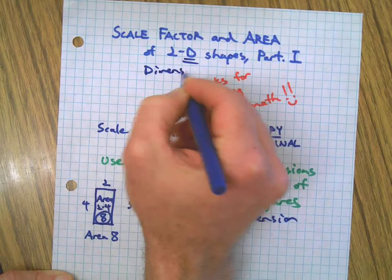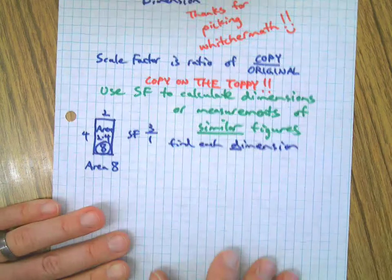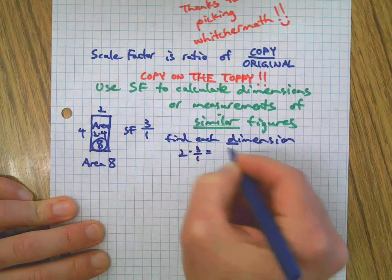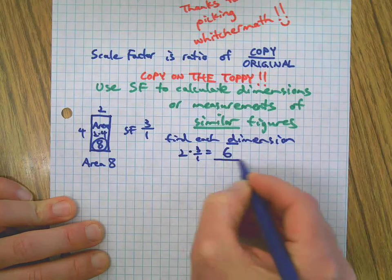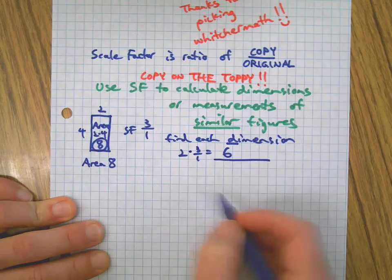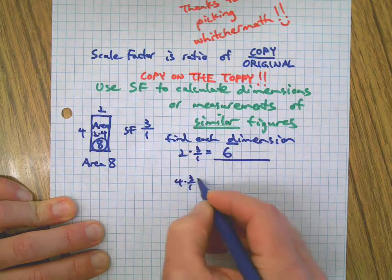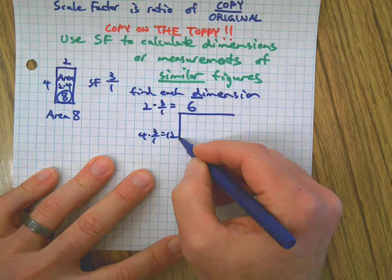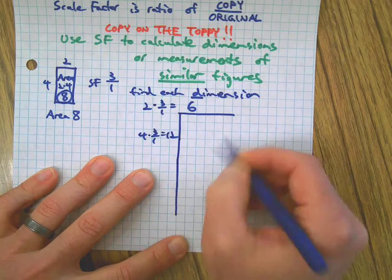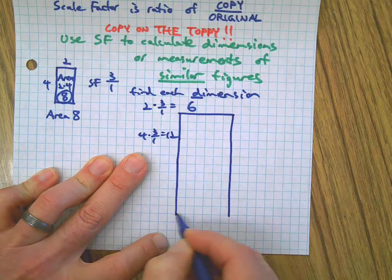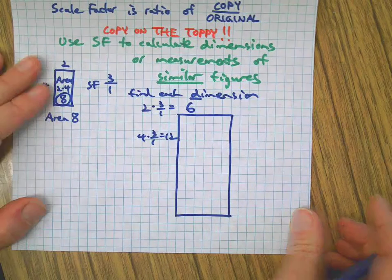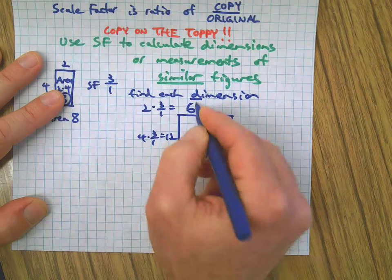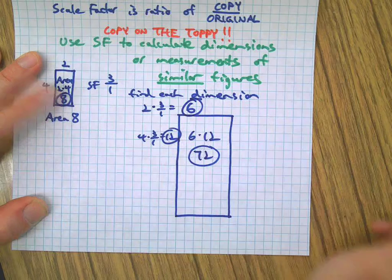Well, first of all we're going to find each dimension. That's where you get the D in 2D shapes, that's where that comes from. It's the word dimension. Dimension is just a measurement. So we're going to take the two times the scale factor equals six, and that's going to be that new dimension. And we're going to take that long side times the scale factor, gives us that new dimension which is 12. Our shape just got quite a bit larger, but we don't care. We're risk takers.